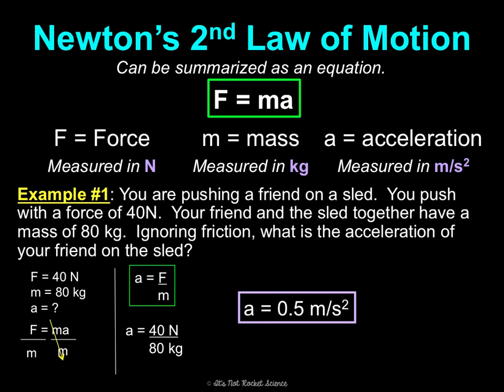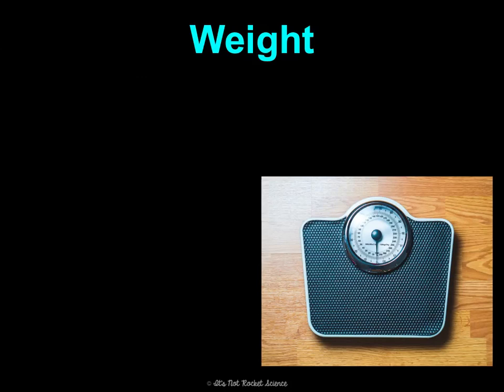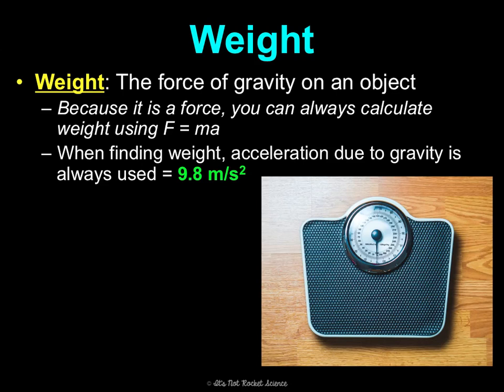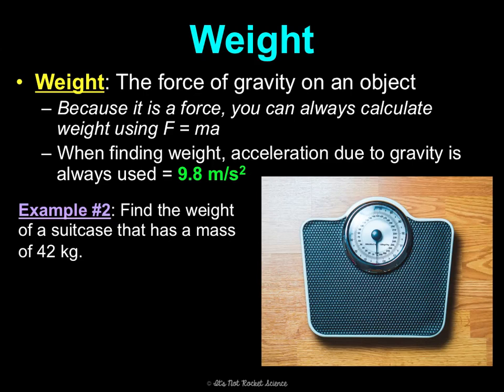Weight is the force of gravity on an object. Because it's a force, we can calculate weight using F = MA, where A is acceleration due to gravity, 9.8 meters per second squared. For example, to find the weight of a suitcase with a mass of 42 kilograms: F = MA = 42 × 9.8 = 411.6 newtons.